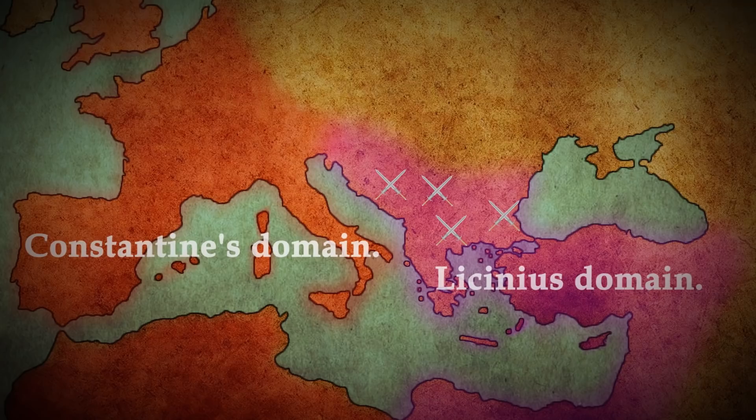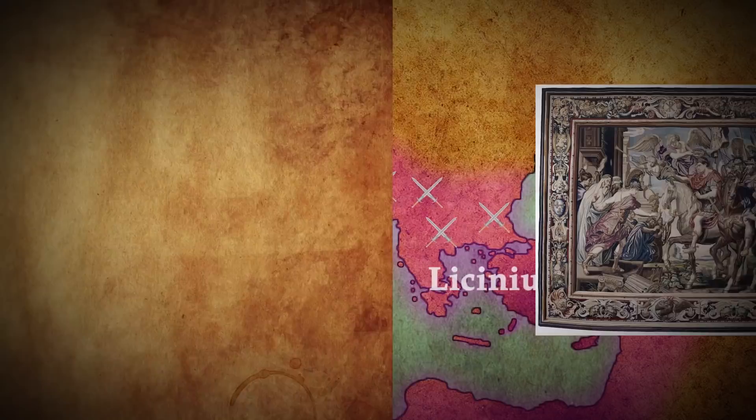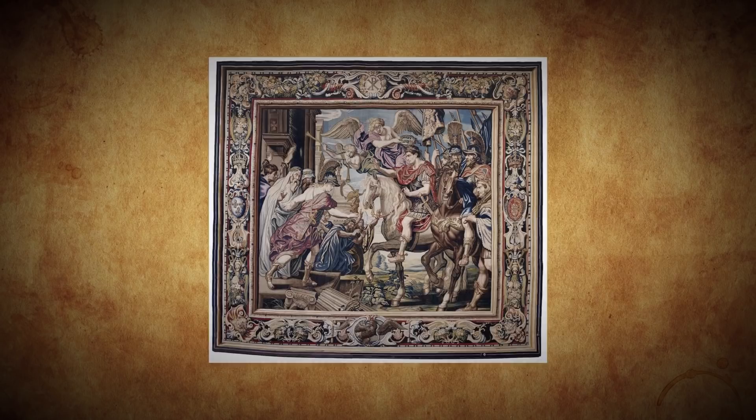With Licinius out of the way, Constantine had eliminated his last political rival and thus won the Roman version of Game of Thrones, which had long lasting consequences for not only the future of the empire, but for the history of Europe itself.